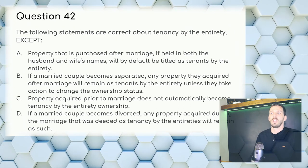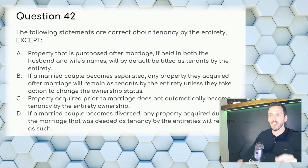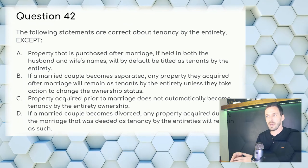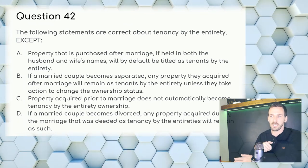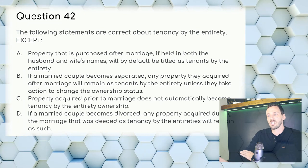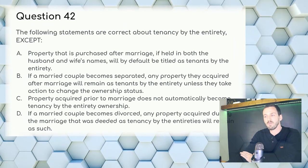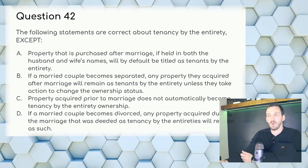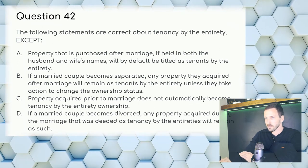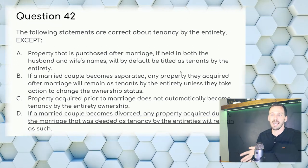Question 42: The following statements are correct about tenancy by the entirety except — death, divorce, or agreement can all terminate tenancy by the entirety. Answer: D — if a married couple becomes divorced, any property acquired during the marriage deeded as tenancy by the entireties will remain as such. That is false; divorce terminates tenancy by the entireties.